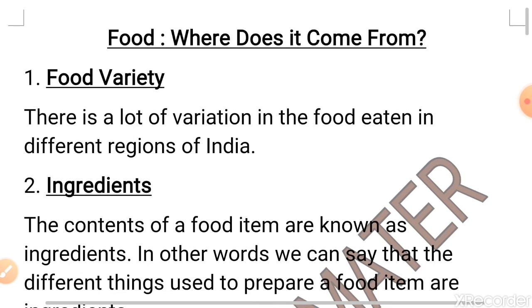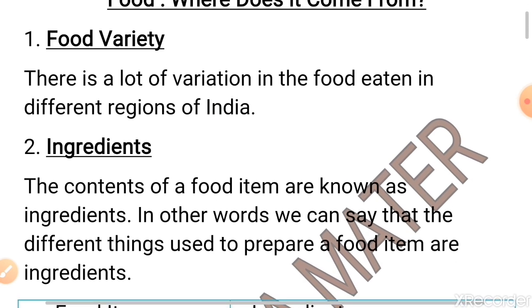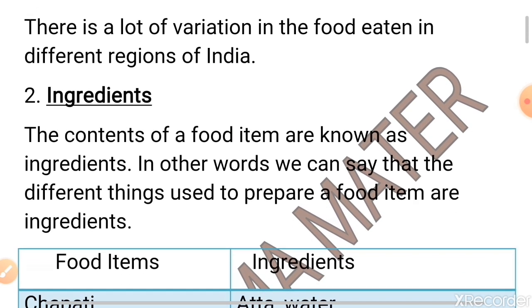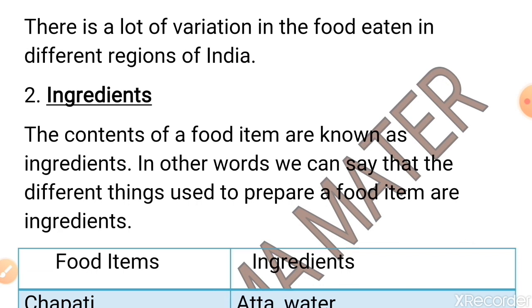Now, ingredients. The content of a food item are known as ingredients. Or we can say that different things used to prepare a food item are ingredients.